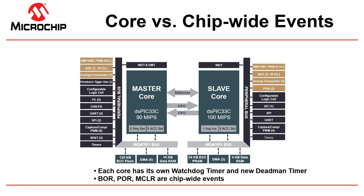Let's introduce you to system events in a dual-core architecture. Events can be either chip-wide or localized to a core. For example, each core has a deadman timer, which is similar to a watchdog timer but with more advanced features. A deadman timeout can be configured to reset its own core. However, events like BOR (brownout reset), POR (power on reset), and master clear are chip-wide events where both cores will reset.